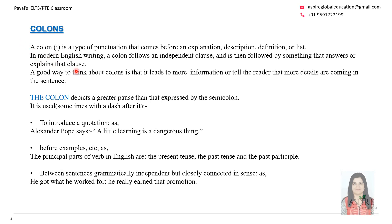Now let's start with a colon. A colon is a type of punctuation that comes before an explanation, description or definition. It depicts a greater pause than that expressed by the semicolon. For example, Alexander Pope says: 'A little learning is a dangerous thing.' The phrase after the colon is basically a description of what this person says, referring to the words quoted by Alexander Pope.